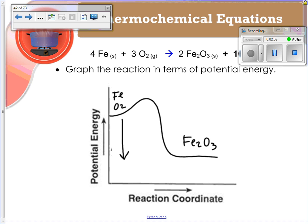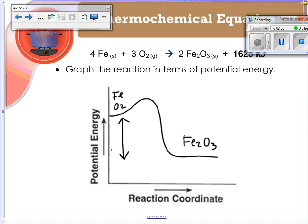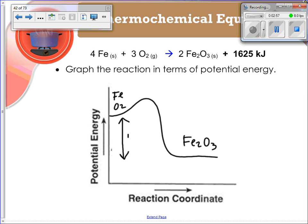This difference right here is this value, 1625 kilojoules. That is what we're actually losing when we go from the products onto the reactants. That is our potential energy that we are losing. So it shows you in both equation form and graph form that we have a loss in overall energy.